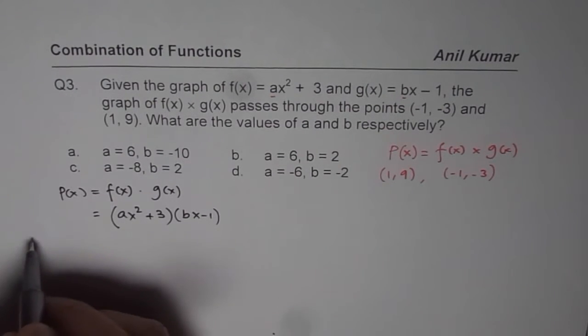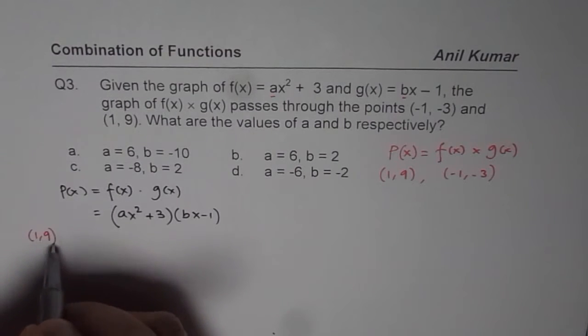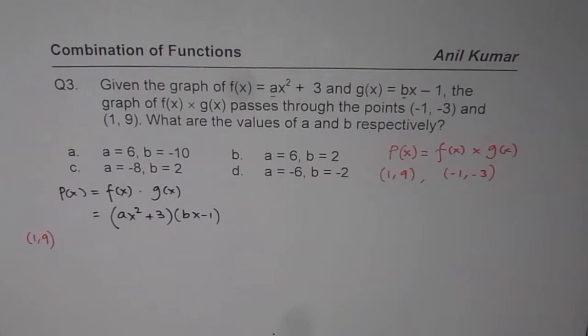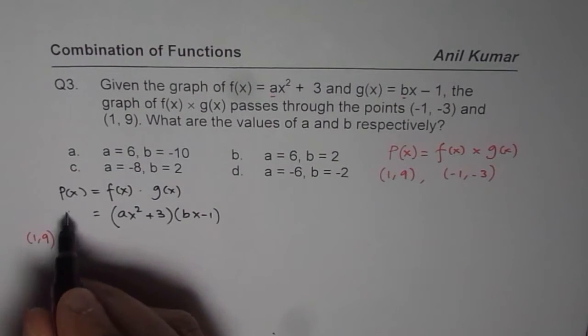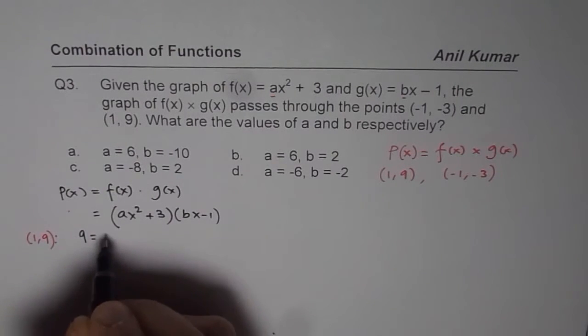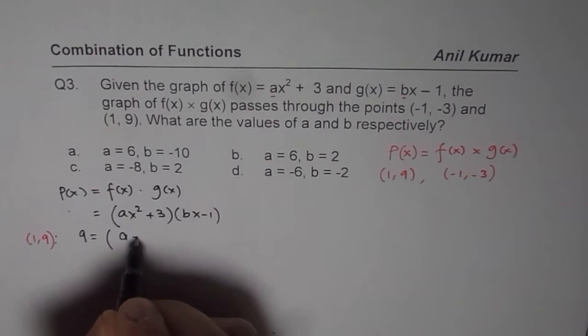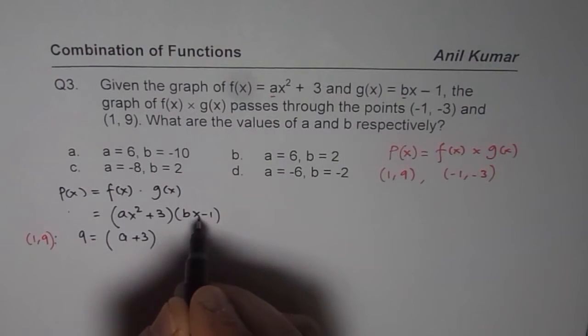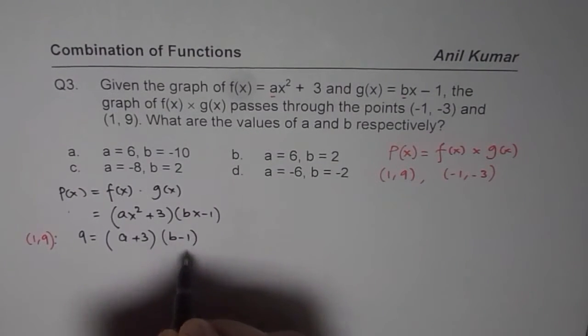So, let us consider first the point 1 and 9. It really means that if x is 1, then p of x is 9. So, using this point, we get the equation 9 equals 1 for x will give you a here plus 3, 1 for b will give you b minus 1.